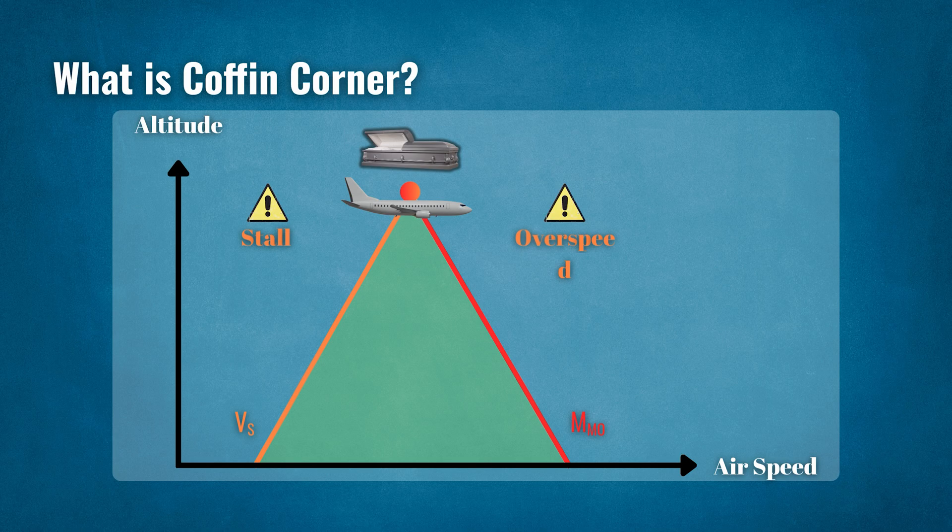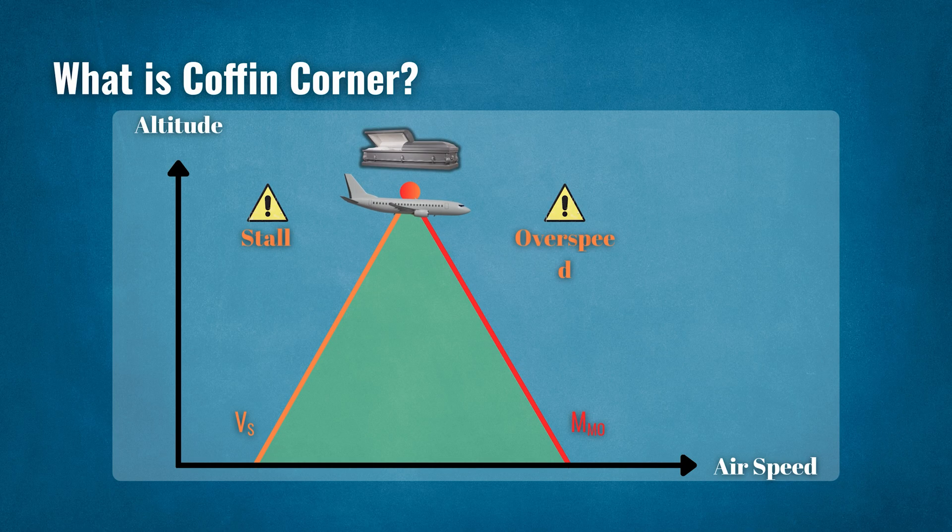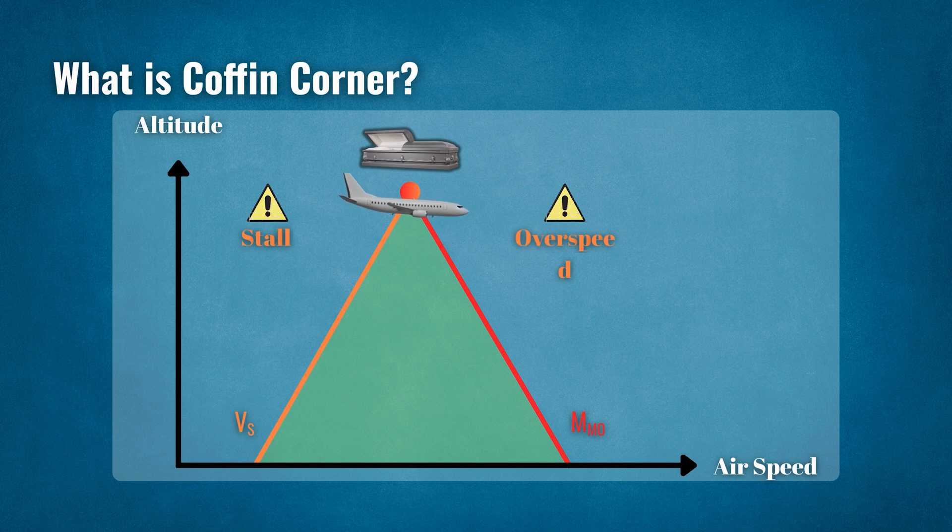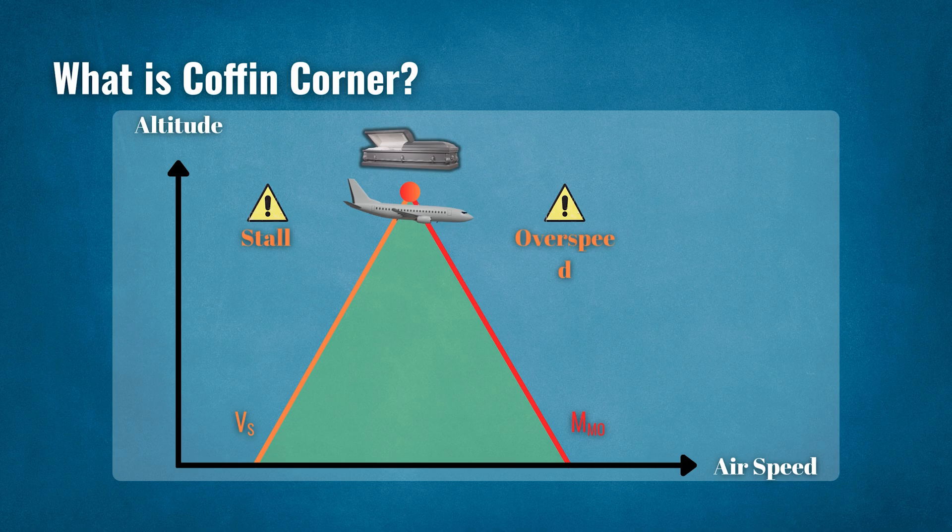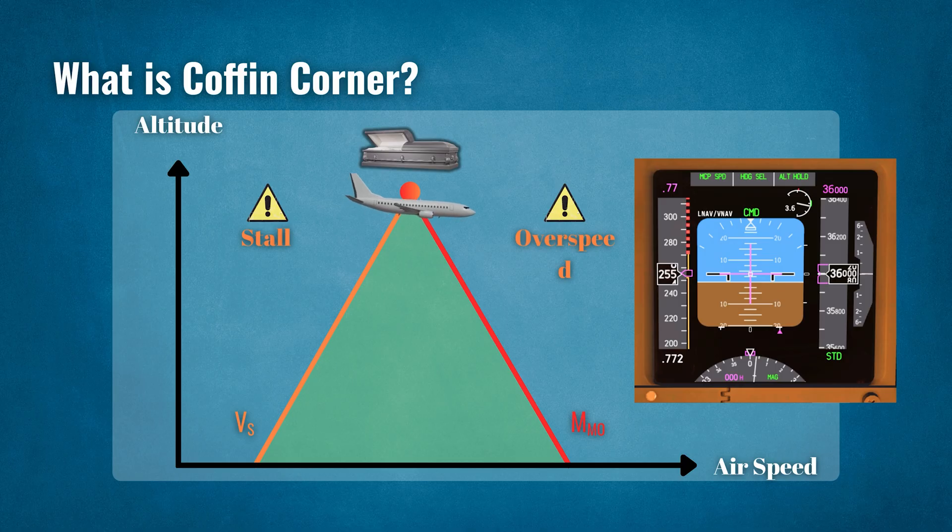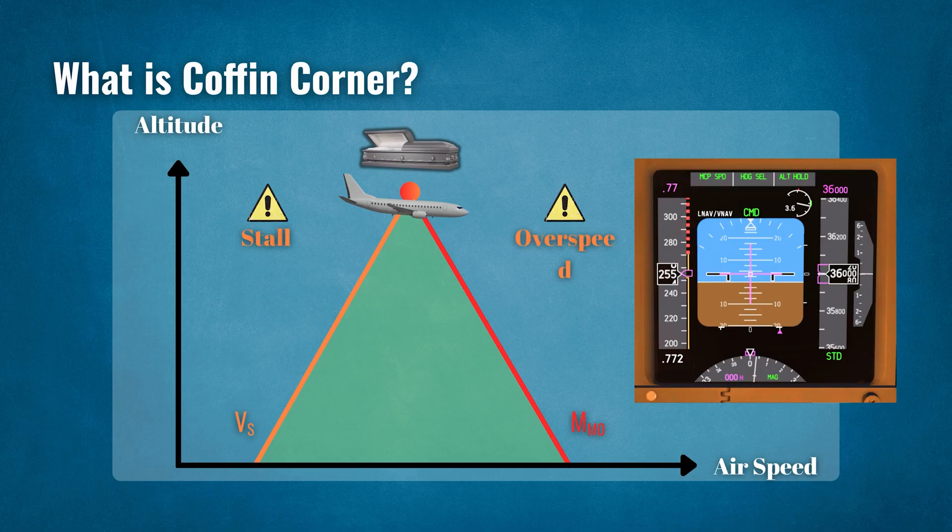It is difficult to maintain steady, straight, and level flight in the coffin corner because the margins are very small. An aircraft must stay within a narrow speed range and avoid reaching beyond the limitations because flying too fast or too slow will cause the plane to hit stall speed. The only way to fly in the coffin corner is to maintain a steady true airspeed within the narrow parameters which continue to narrow further with higher altitude.